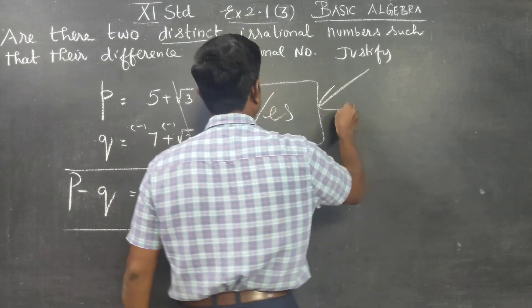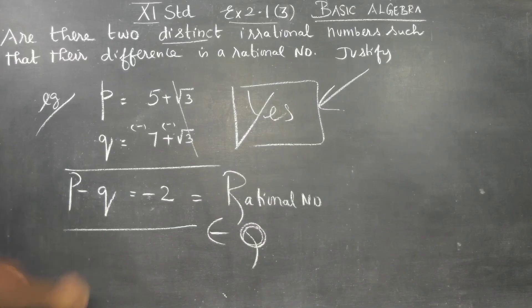Yes. You have to give an example for this. Let P is equal to, Q is equal to. Then if you find the difference, you will be getting a rational number. Example for this. We can use root numbers.